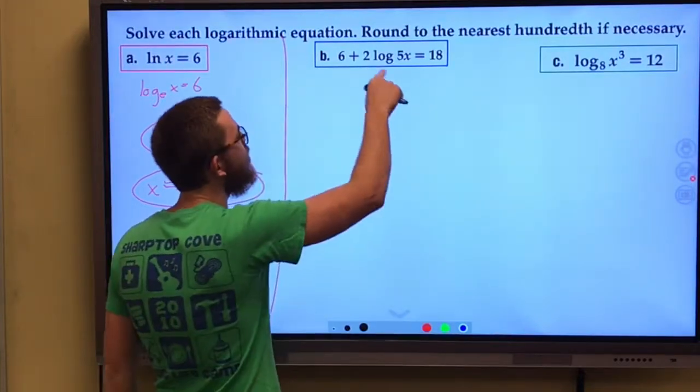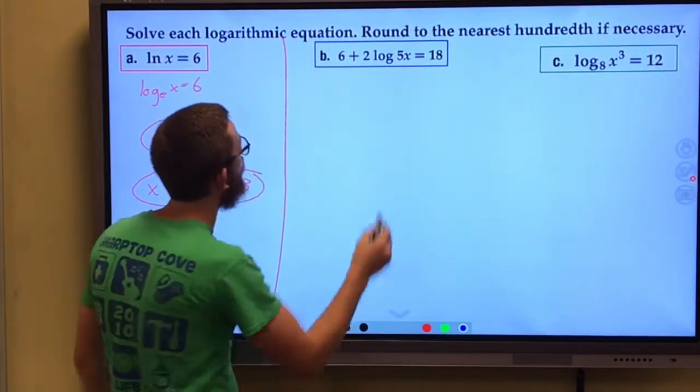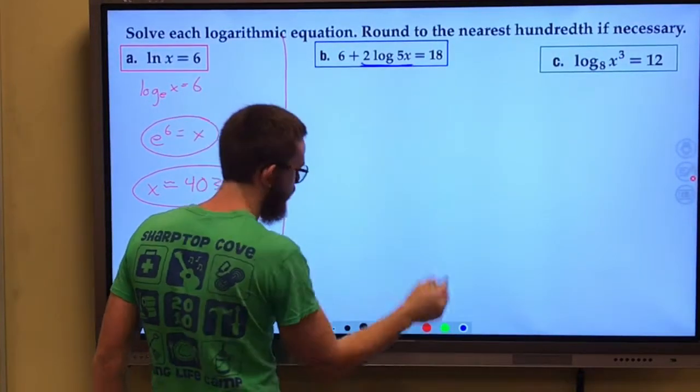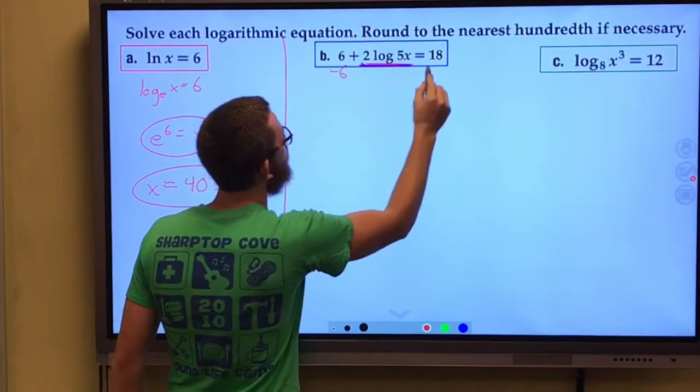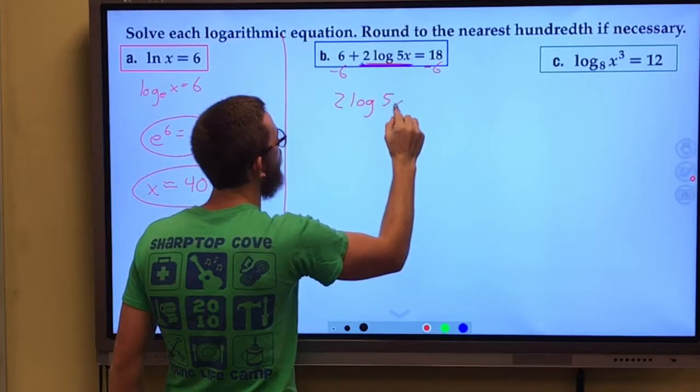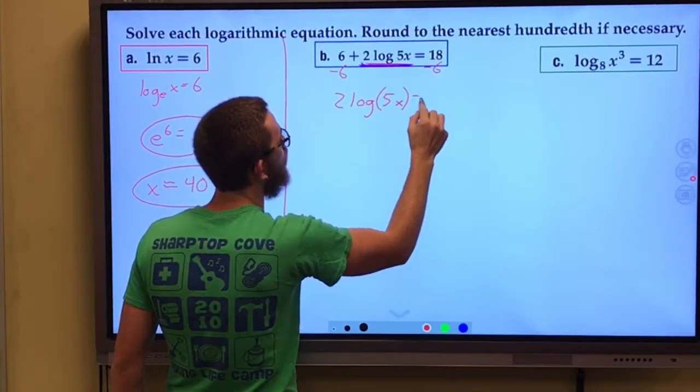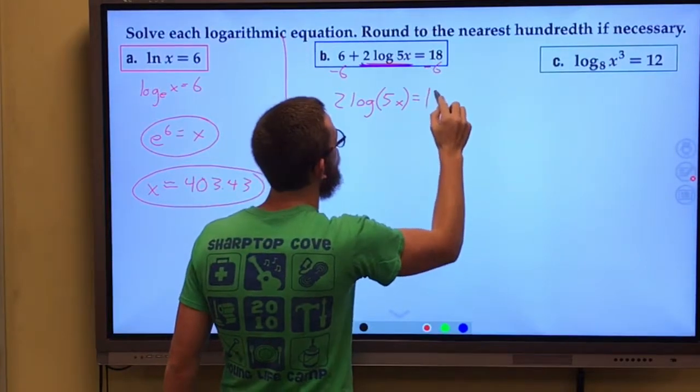First thing I'm going to do is I'm going to get this log, the term with the logarithm by itself. And I'm going to do that by subtracting six from both sides. So I now have 2 log 5x = 12.